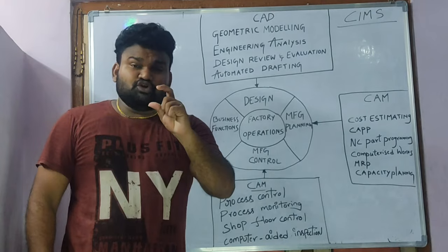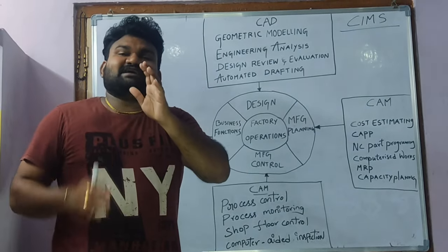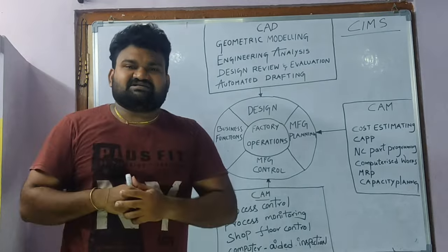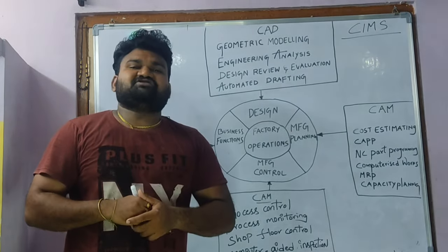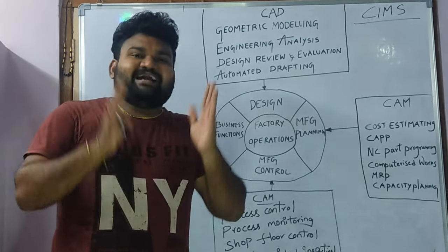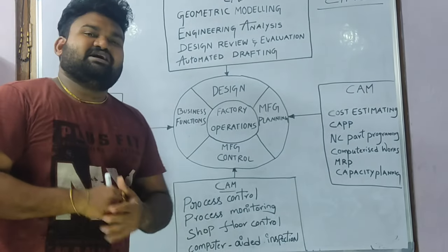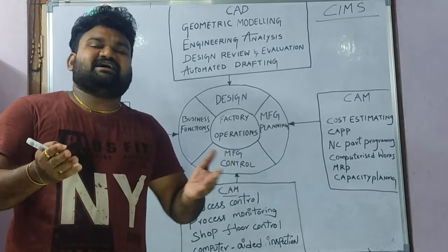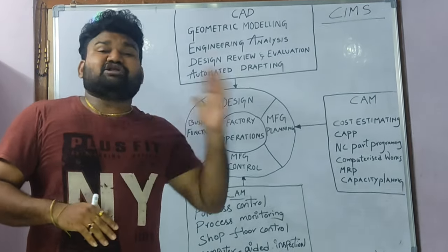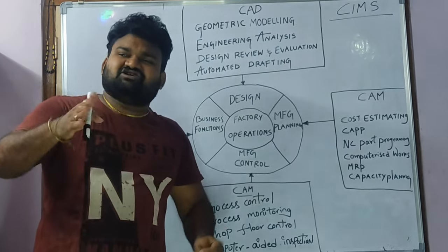What do we do first? We design that part. Then we do the drafting picture and the drawing. In automation and computer-integrated manufacturing, we do the manufacturing process, the planning process, and implement it. We do the controlling process and the inspection process. This is the regular process — we do the design and manufacturing process.